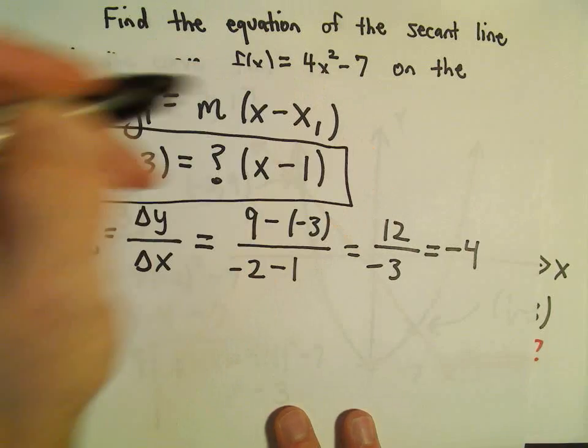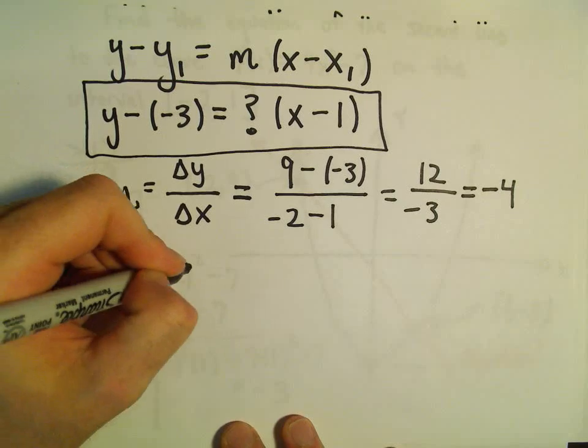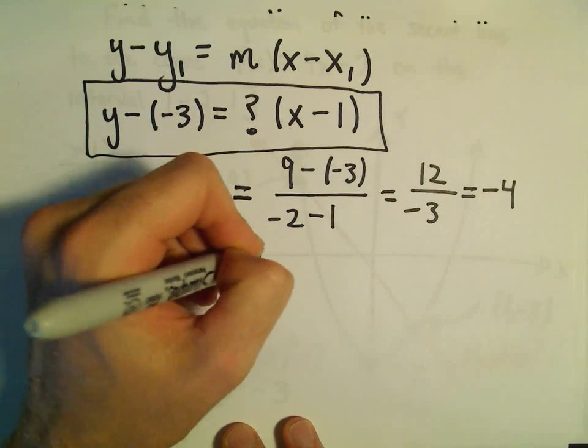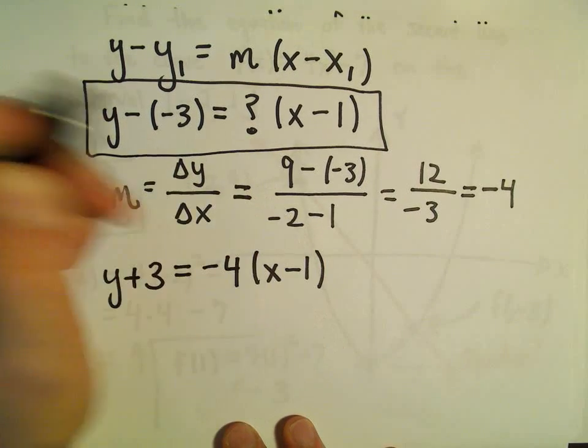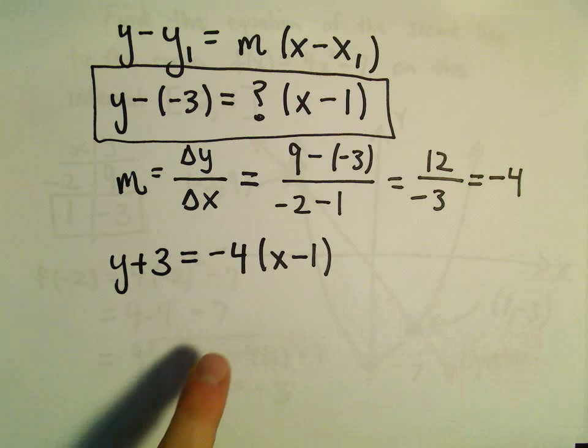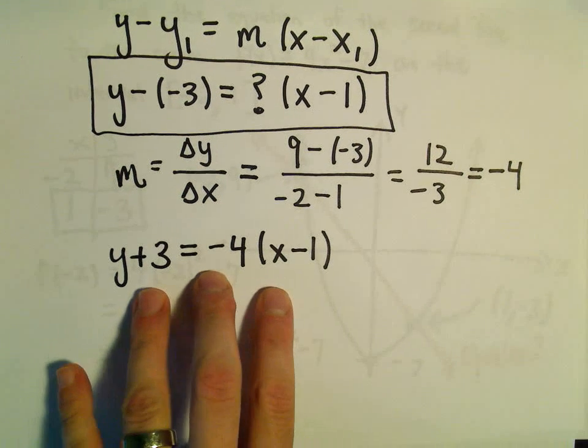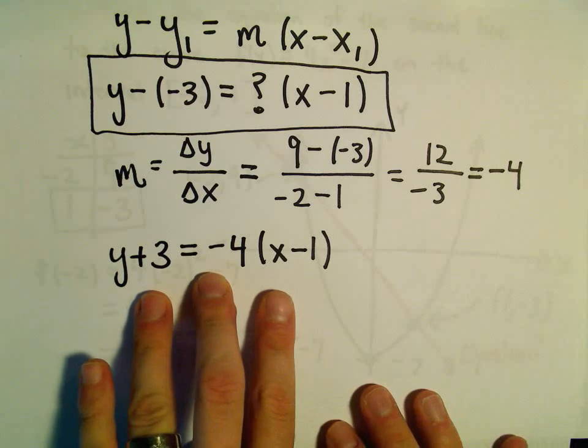Now I'm just going to plug all of that back into my equation of my line. So we've got y - (-3), which would give us y + 3, our slope of -4 times (x - 1). To me this is now an equation of a line, so on a quiz or a test, I would tell people hey you can stop here. That's an equation of a line.